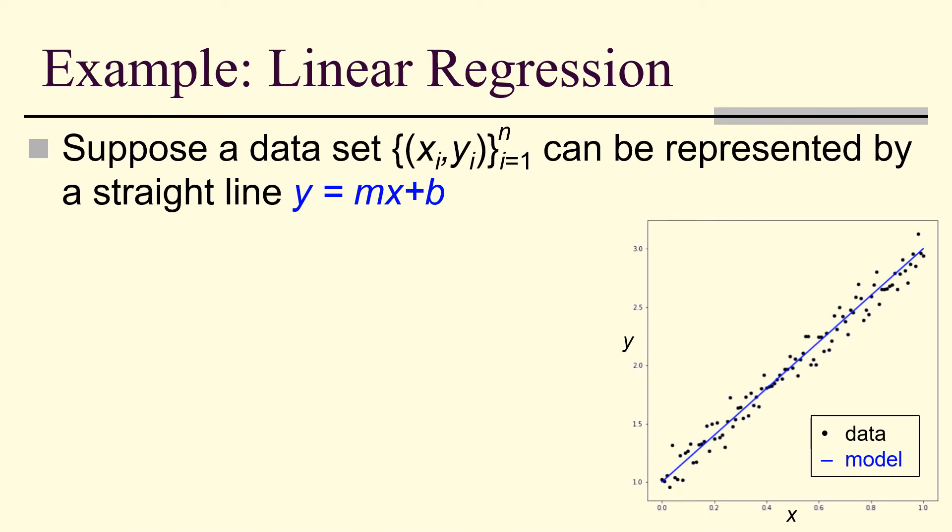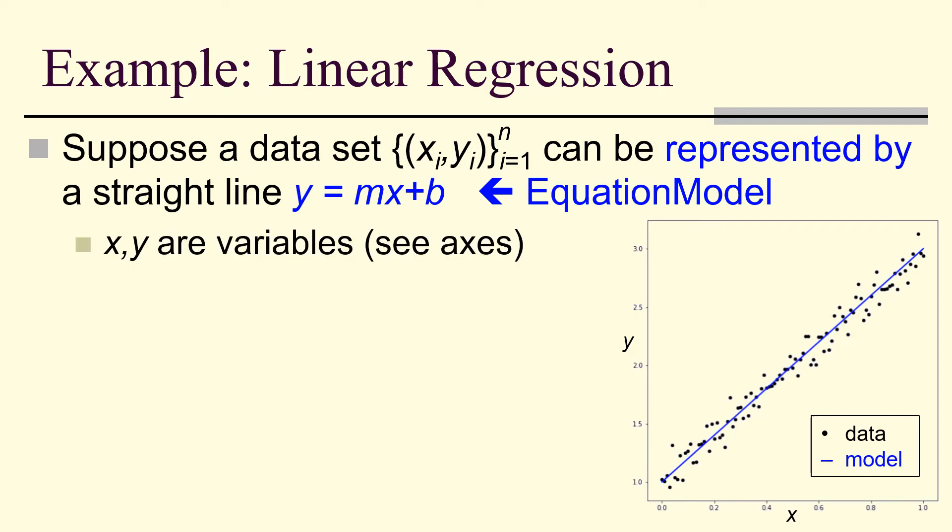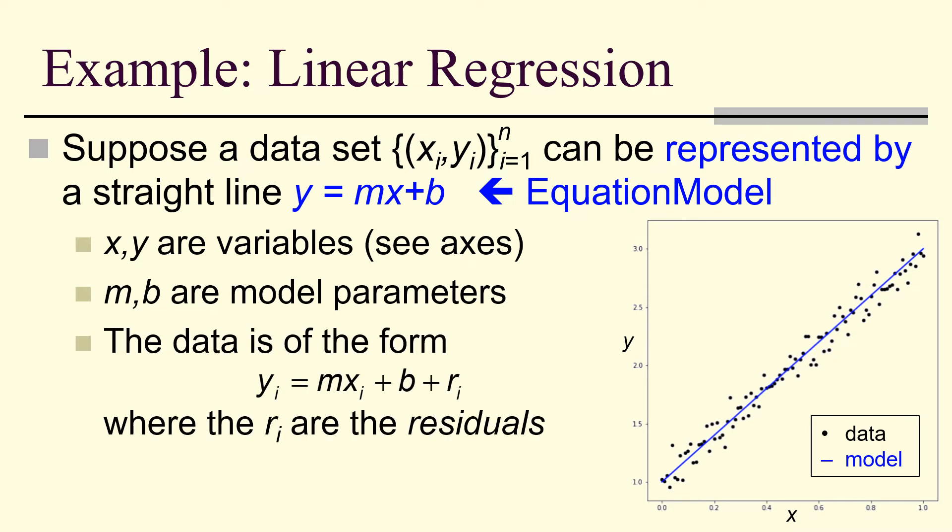Let's look at linear regression. Here we have y equals mx plus b. That's our equation model. x and y are the variables. m and b are the parameters. The data is of the form y sub i equals mx sub i plus b plus r sub i, where the r sub i are the residuals. This is the noisy part.